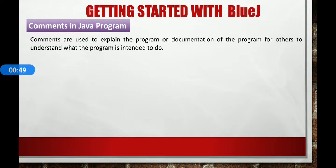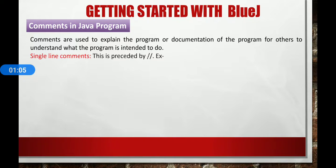Comments are used to explain the program or documentation of the program for others to understand what the program is intended to do. Comments are ignored by the compiler and not treated as executable part of the program. There are two types of comments. First one, single line comments.